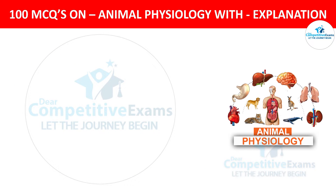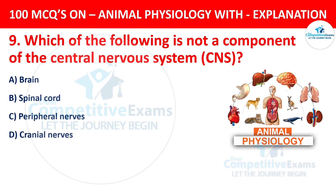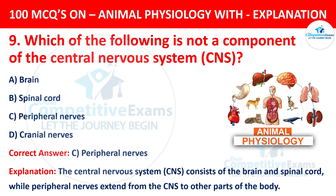Question number 9. Which of the following is not a component of the central nervous system (CNS)? The options are brain, spinal cord, peripheral nerves, or cranial nerves. The correct answer is C, peripheral nerves. The central nervous system consists of the brain and spinal cord, while peripheral nerves extend from the CNS to other parts of the body.